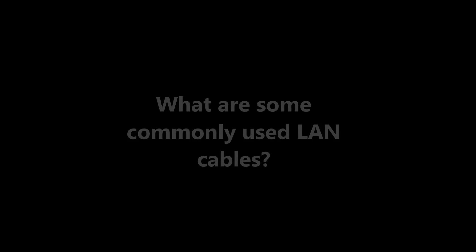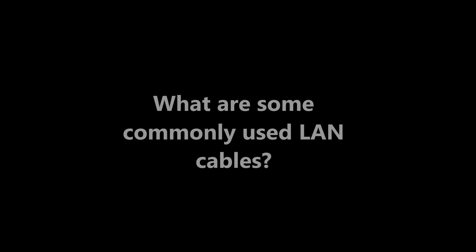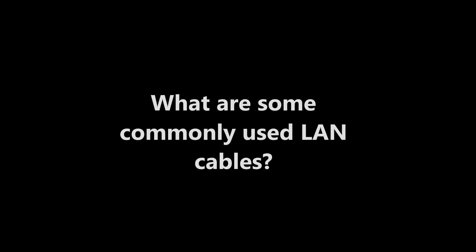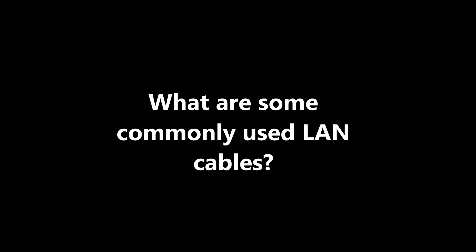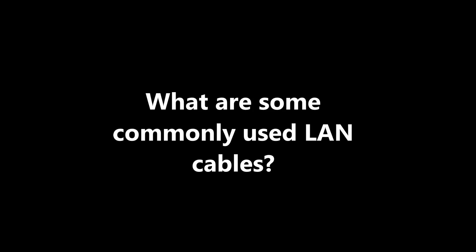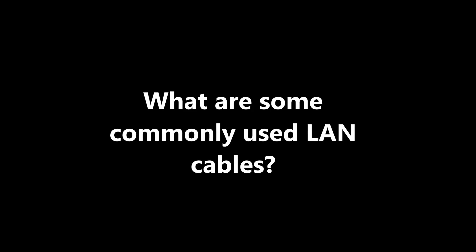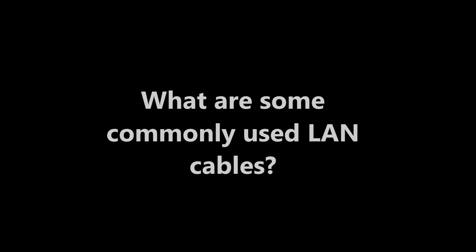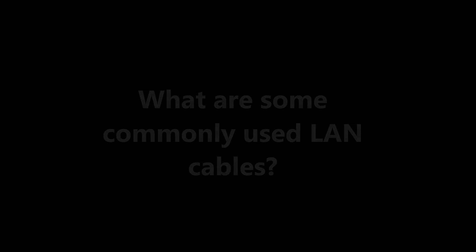Question number nine: what are some commonly used LAN cables? There are four different types: Cat5, Cat5e, Cat6, and Cat6e. Cat5 and Cat5e are typically good up to speeds of 100 megabits, although Cat5e can sometimes be even faster. Cat6 and Cat6e are good for speeds upwards of one gigabit per second — a gigabit network speed.